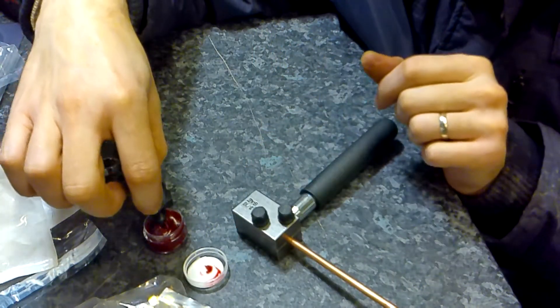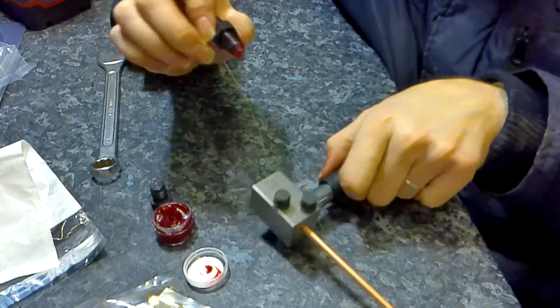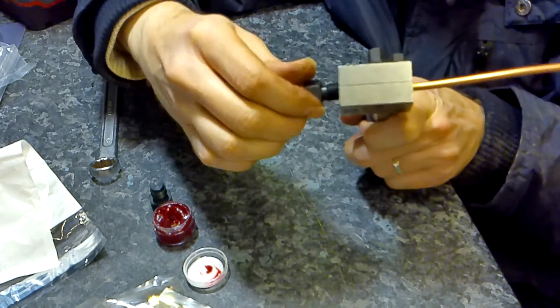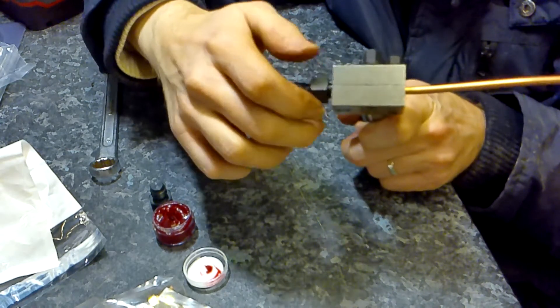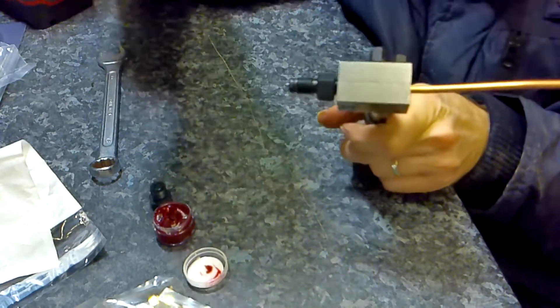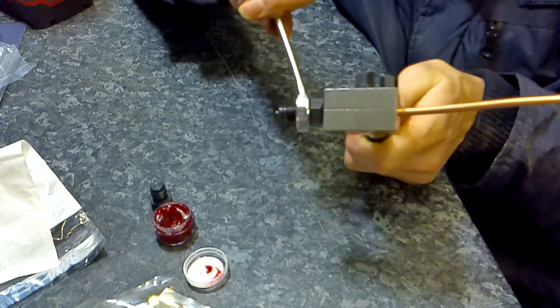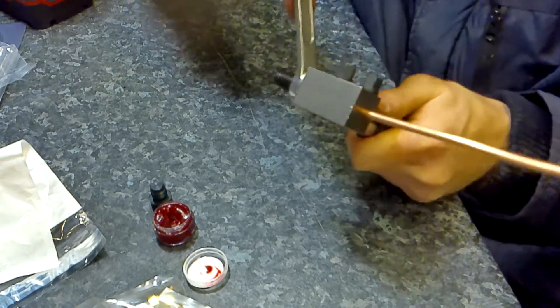So what we can now do is move on to our double flare. So remember, follow the op one, and it's the other end we want. So it's that end. Let's have a bit more grease on the end. Don't go crazy with the grease. And then again, just start to do that, and I can feel it starting to bite.